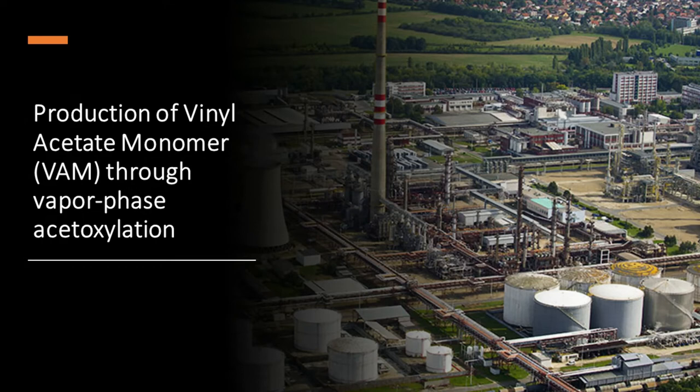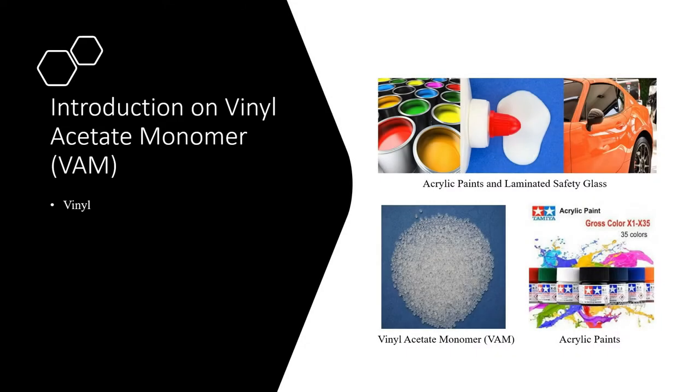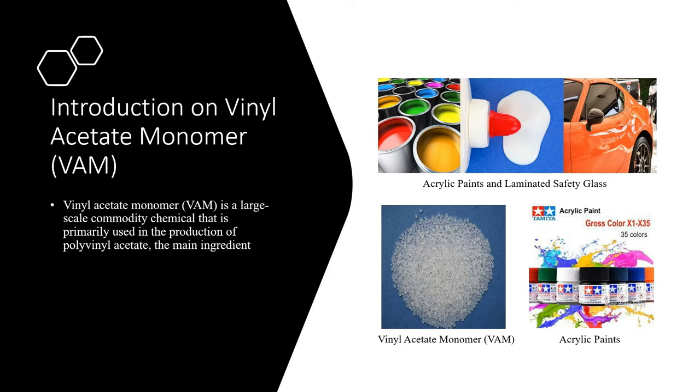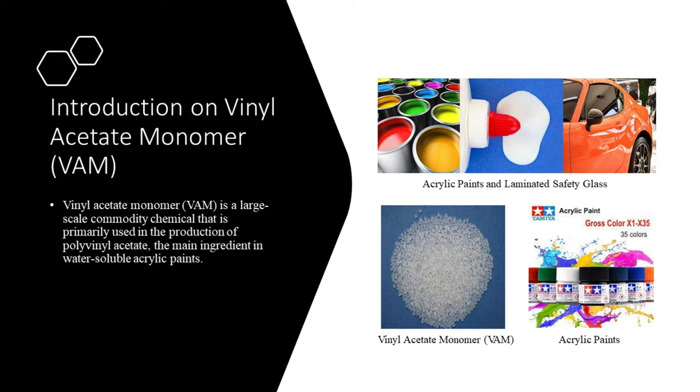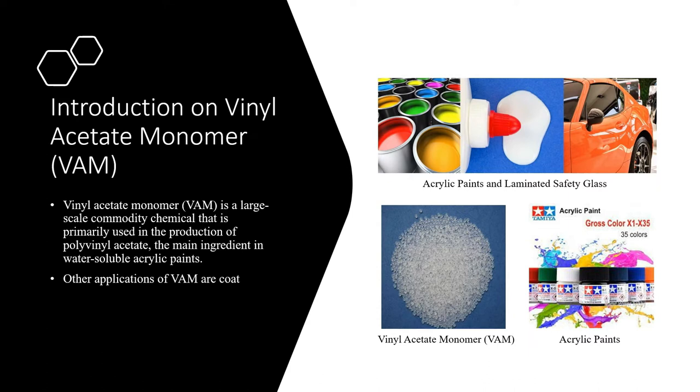Production of vinyl acetate monomer through vapor phase acetoxylation. Vinyl acetate monomer is a large-scale commodity chemical that is primarily used in the production of polyvinyl acetate, the main ingredient in water-soluble acrylic paints.